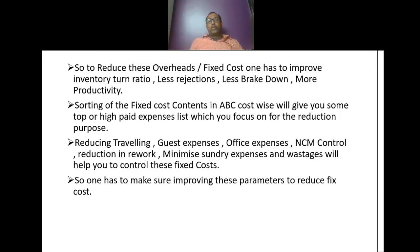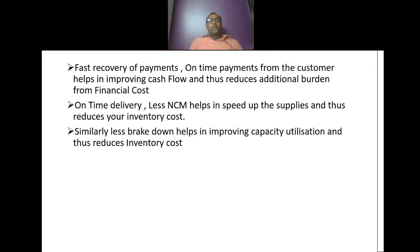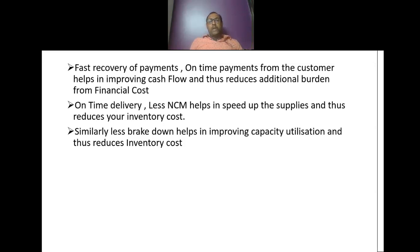One has to make sure to improve these parameters to reduce fixed cost. Fast recovery of payments — on-time payments from the customer — helps in improving cash flow and thus reduces additional burden on financial cost. On-time delivery and less NCM helps speed up supplies, reduces inventory cost, and helps maintain cash flow, reducing burden on financial cost. Similarly, less breakdown will help improve capacity utilization and thus reduce inventory cost.